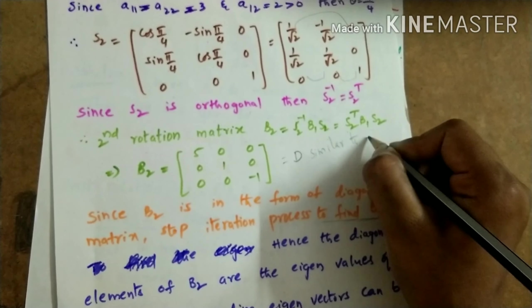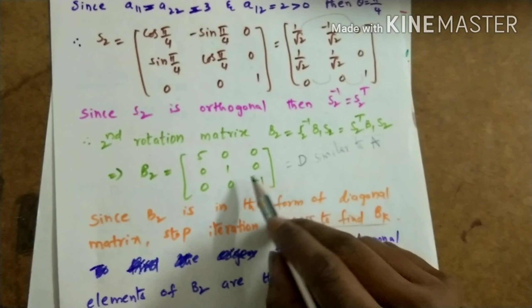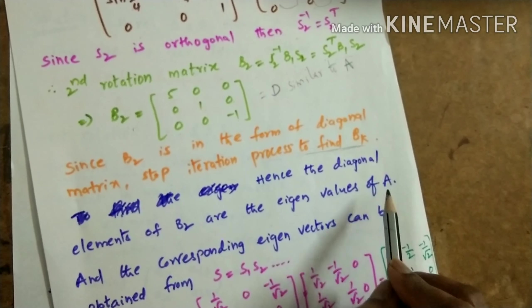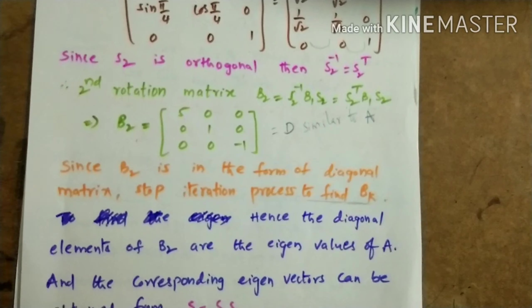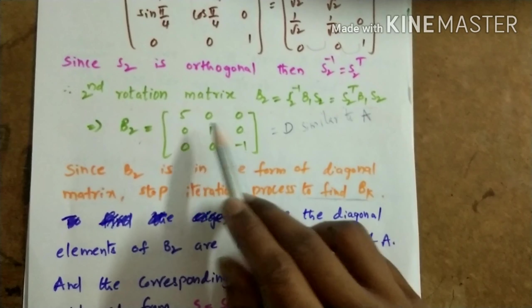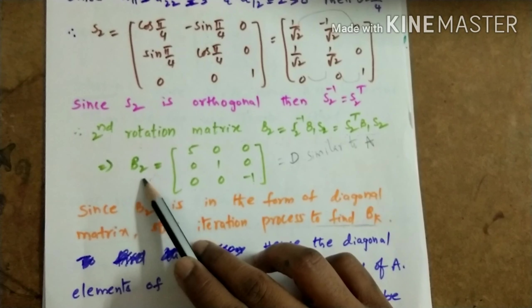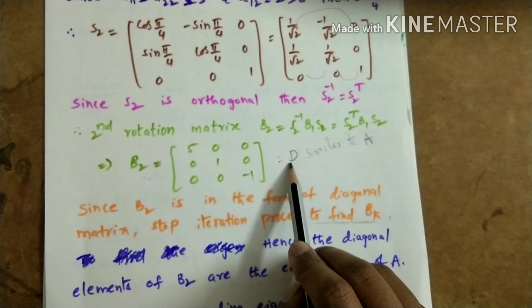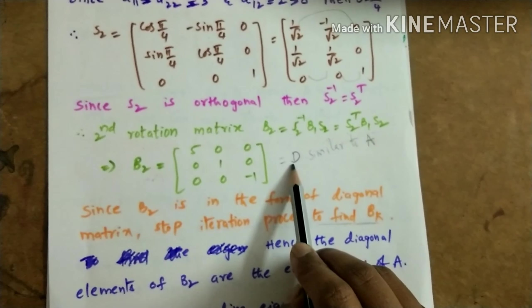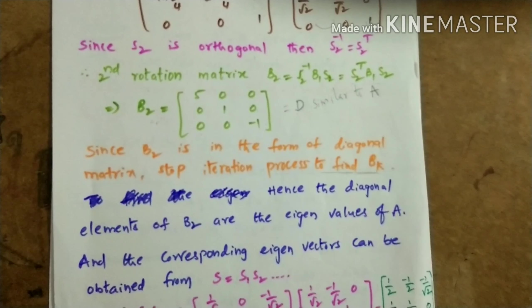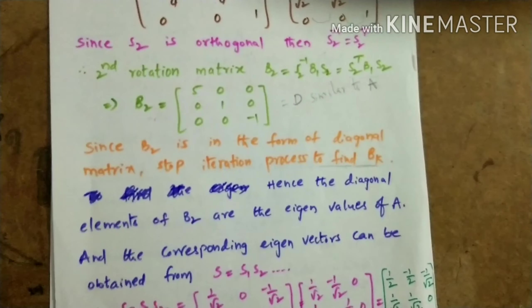The iteration process is stopped since B2 is diagonal. This diagonal matrix D is similar to matrix A, so the diagonal elements of D (which is B2) are taken as the eigenvalues of the given matrix A. If B2 had not been diagonal, we would apply the same process again to get B3, B4, and so on until a diagonal form is achieved.